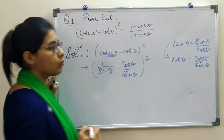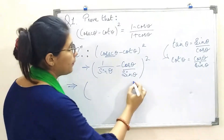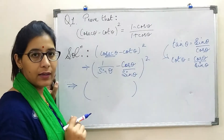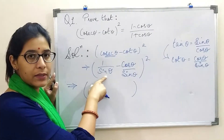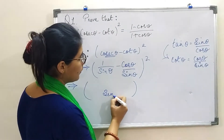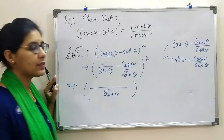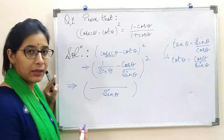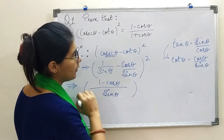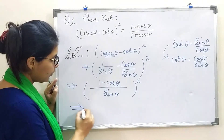The whole square is also given. Now in the next step, we will take the LCM. The first ratio has sin theta in the denominator and the second ratio also has sin theta in the denominator. So I will use sin theta as the LCM. Since both ratios have sin theta below, cross multiplication will not happen here. The numerator becomes 1 minus cos theta, and the whole square continues as it is.